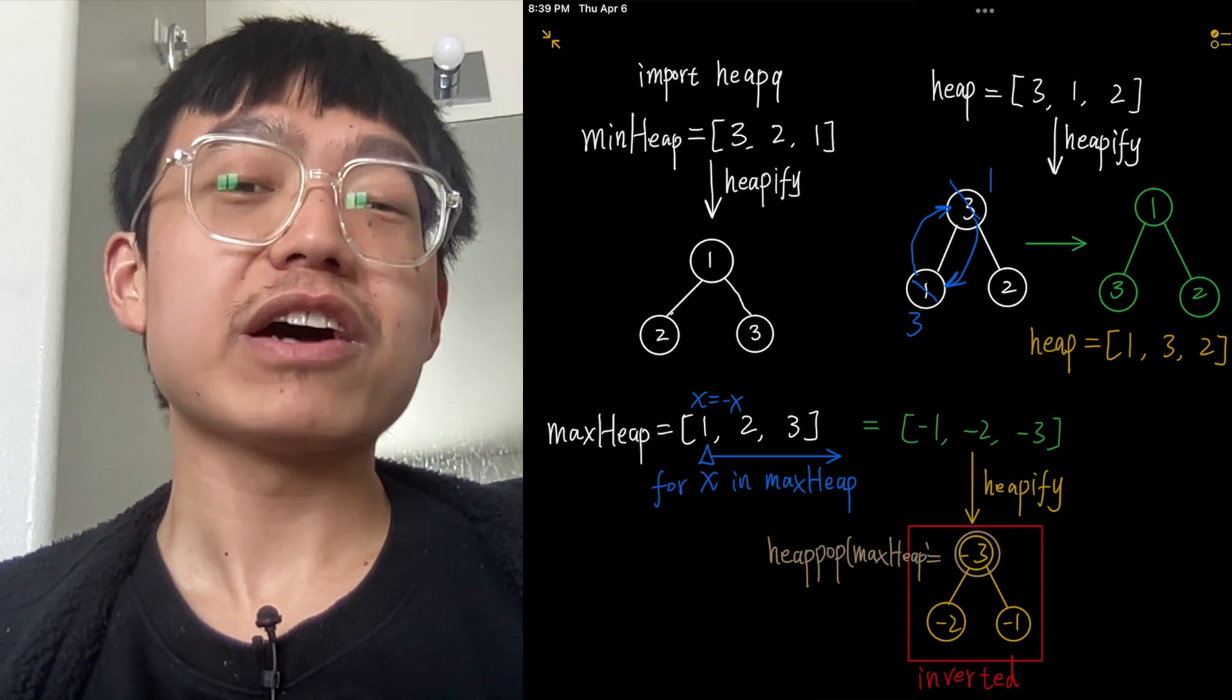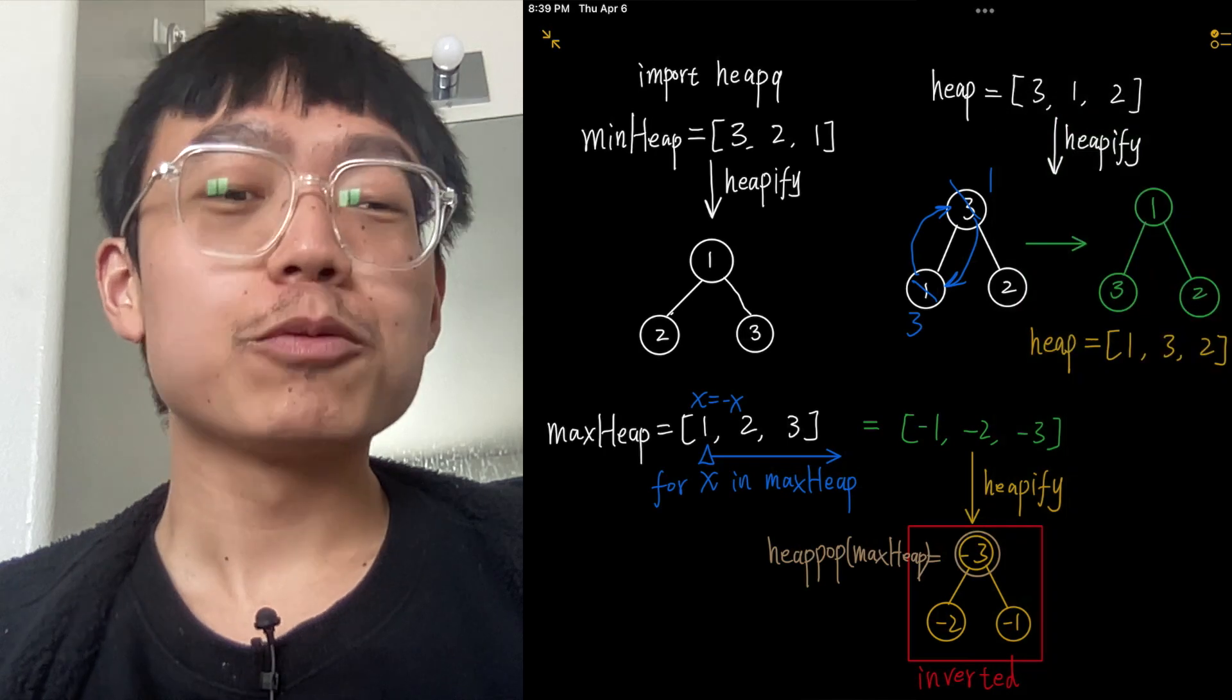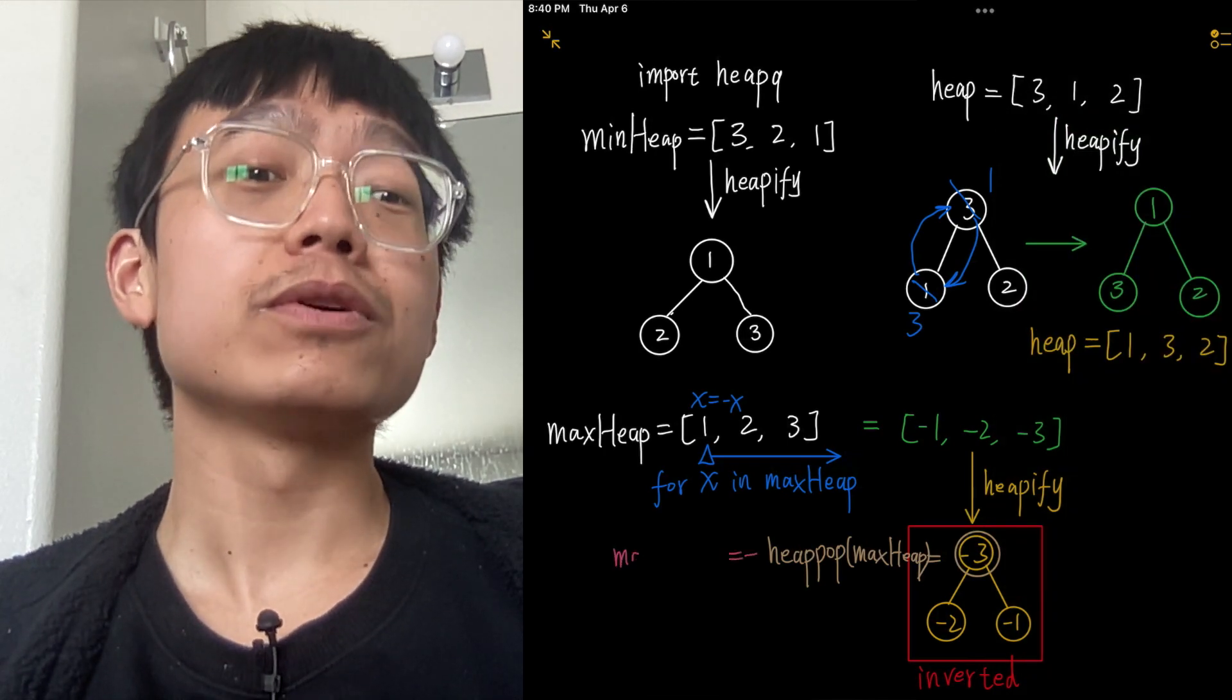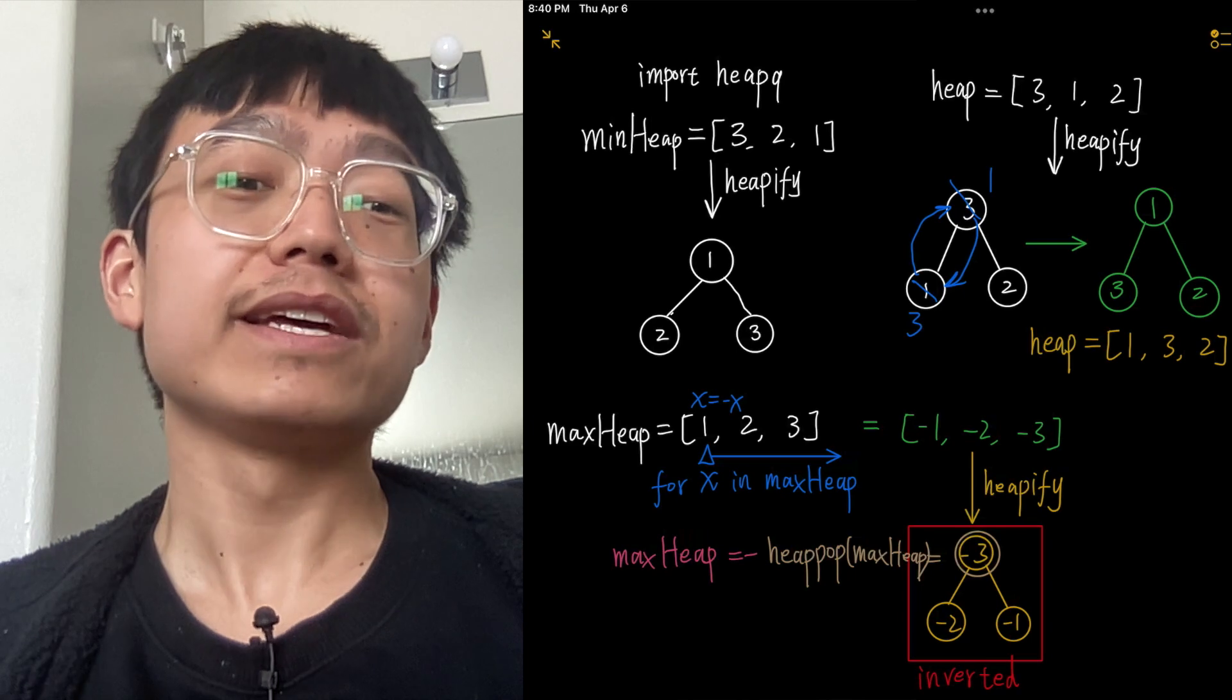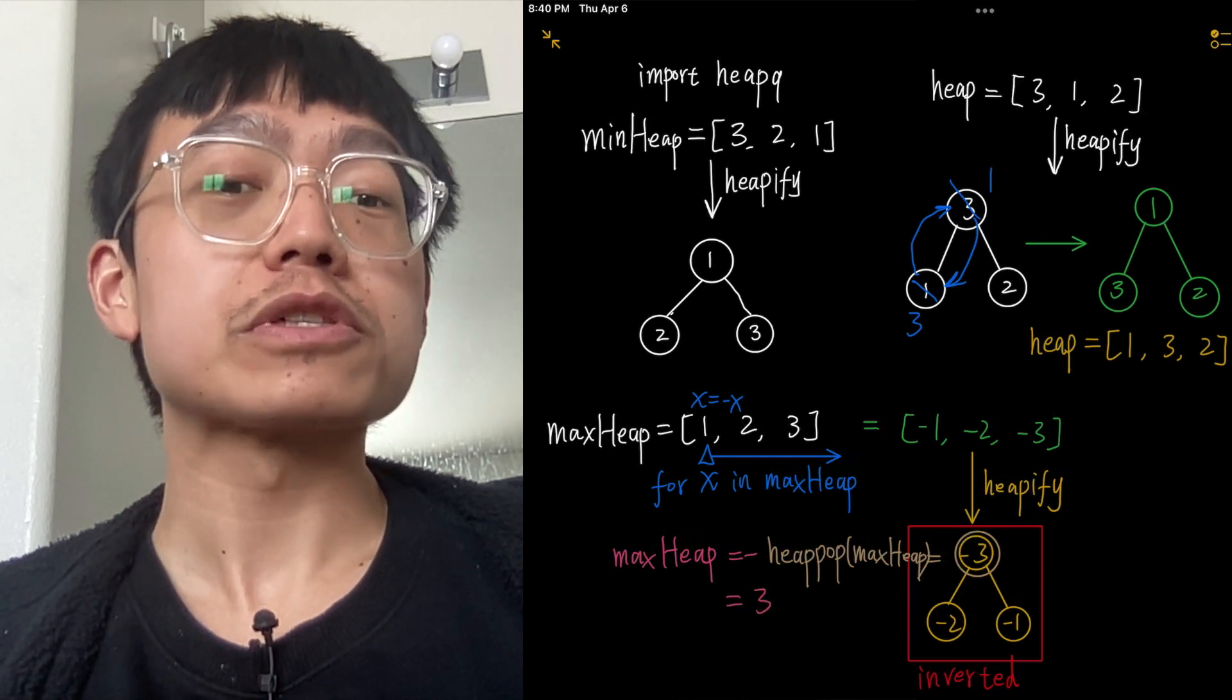To find the maximum value in the original dataset, we convert -3 to 3, which is the maximum value in the original maxHeap.